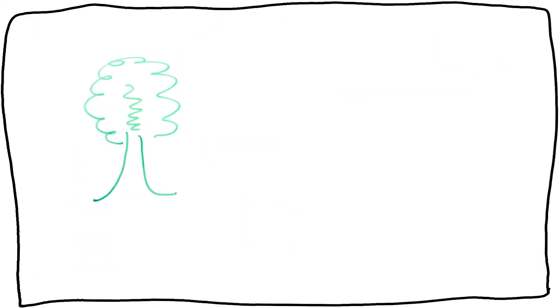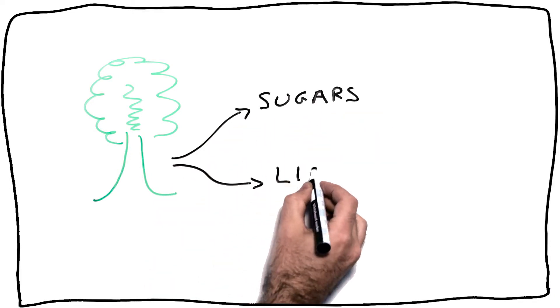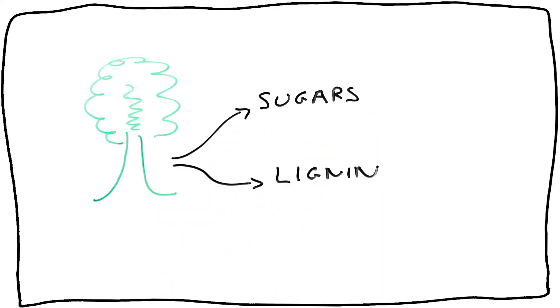Lignocellulosic biomass is composed of two major components, sugars and lignin. Lignin is one of the main constituents of the cell walls of almost all dry plants and is potentially available in large quantities.